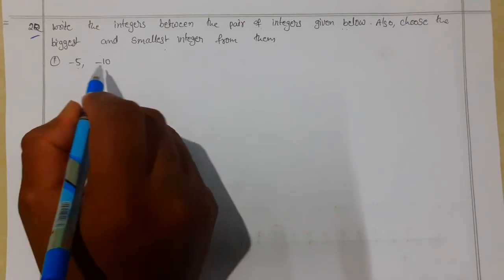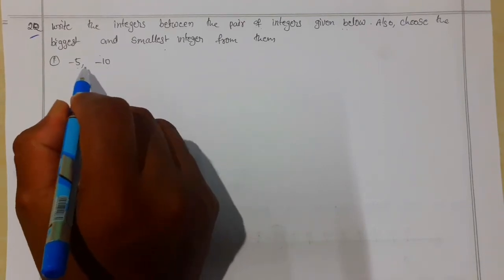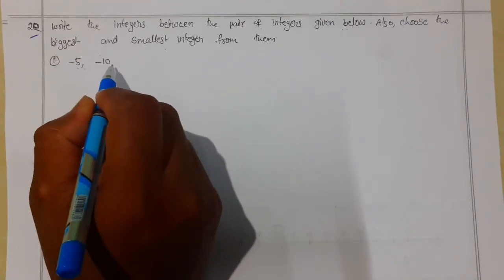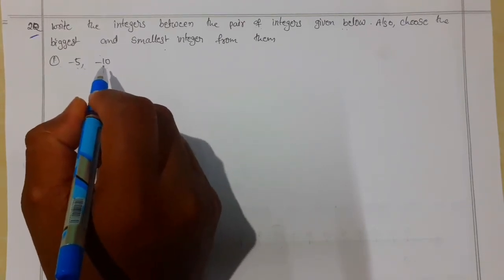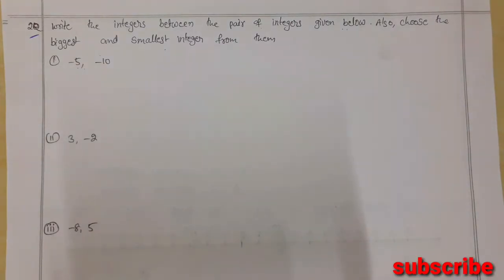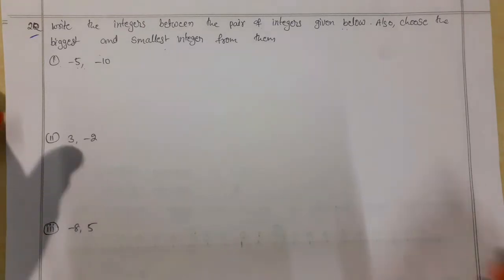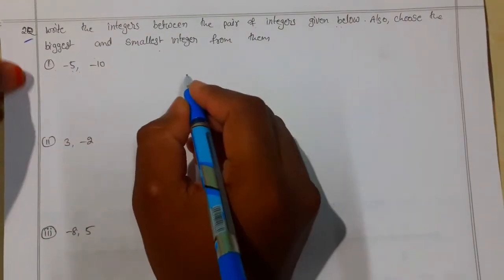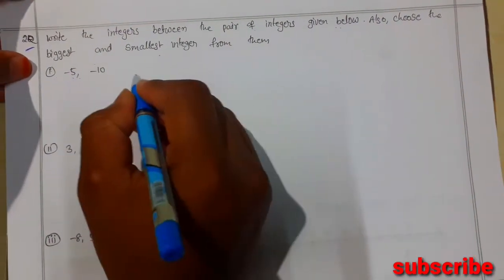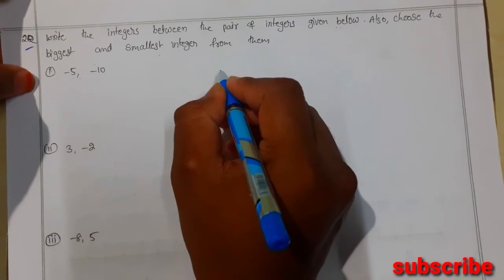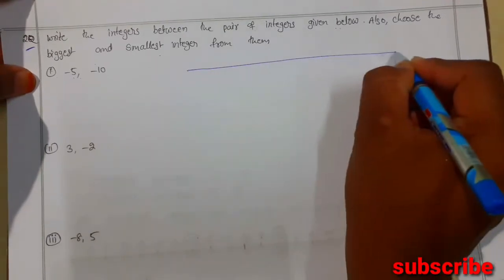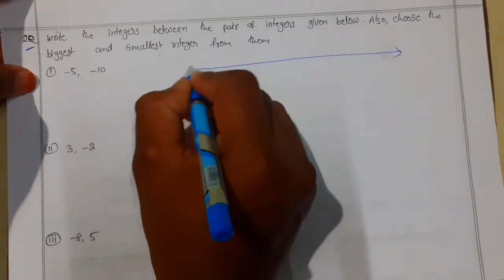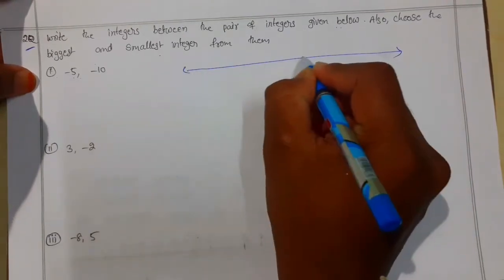The first question is minus 5 and minus 10. That means we need to write all integers which lie between minus 5 and minus 10. For the sake of convenience, let me explain this answer with the help of a number line.